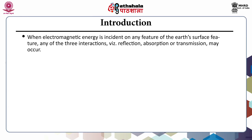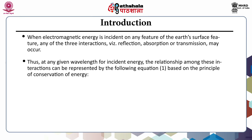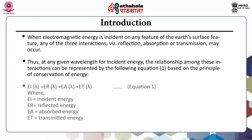Majority of the remote sensing systems operate in the region in which the surface features mostly reflect the incident energy. The reflectance characteristics of the surface feature are represented using a spectral reflectance curve. At any given wavelength for incident energy, the relationship among these interactions can be represented as: incident energy (Ei) equals reflected energy (Er) plus absorbed energy (Ea) plus transmitted energy (Et).